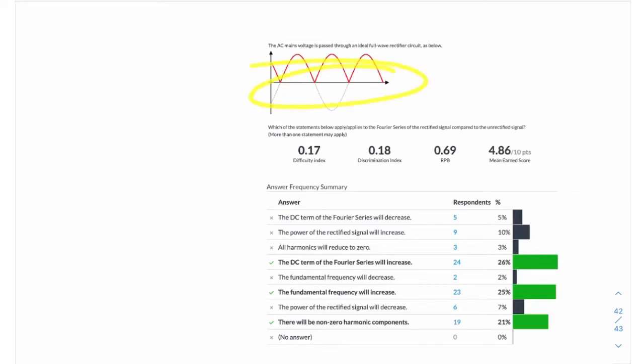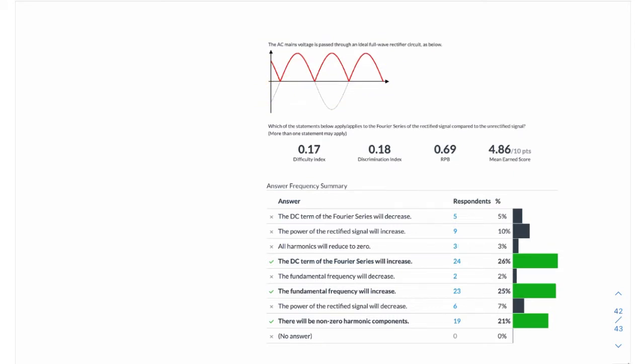In this question, we have a sine wave that's passed through a full wave rectifier. So the output will be this red signal here. And the question is about what happens to the signal after it's rectified. What happens to the spectrum of this signal?